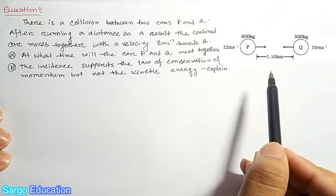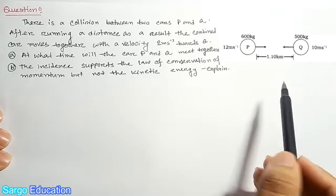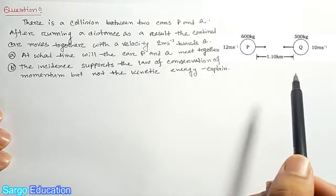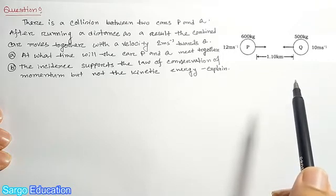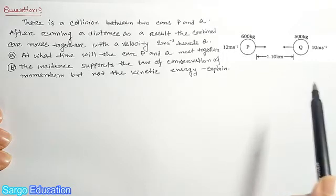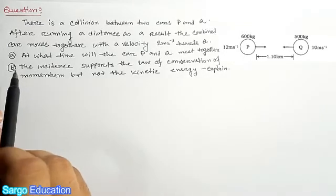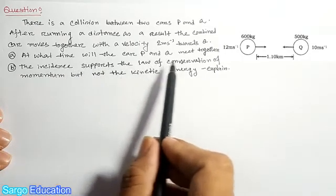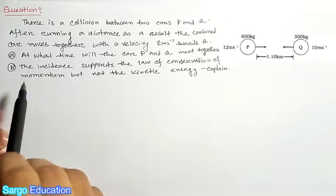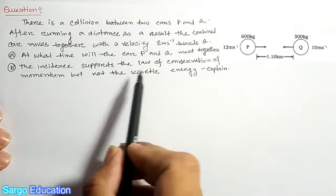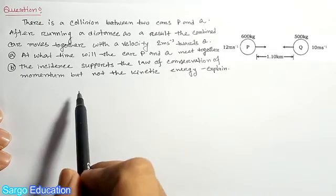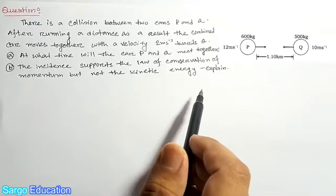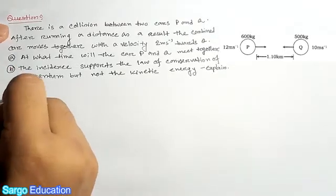Today we discuss a new mathematical problem. There is a collision between two cars P and Q after running a distance. As a result, the combined car moves together with a velocity of 2 meters per second towards Q. We will find two things: at what time will car P and Q meet together, and does the incident support the law of conservation of momentum but not kinetic energy?